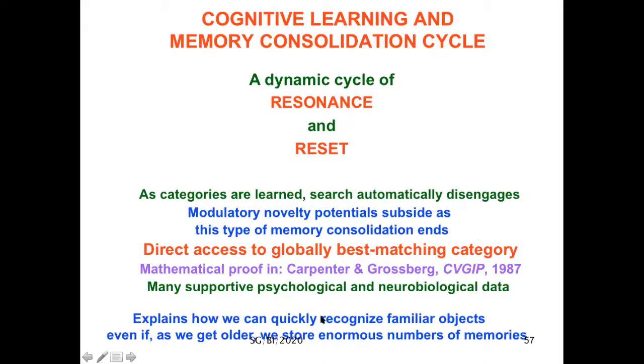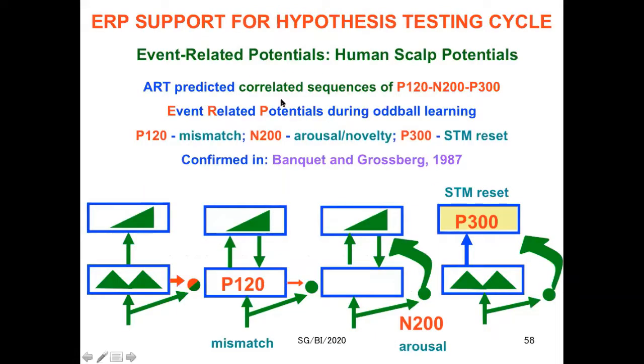This search goes on for a while, so you have a dynamic cycle of resonance and reset. It's a mathematical theorem that as categories are learned, search automatically disengages, leading to direct access to the globally best-matching category. This explains how you can quickly recognize familiar objects even as you get older and know lots more things about the world. So when you see your ma, you can say hi ma without doing an n over log n search through everything else you know.